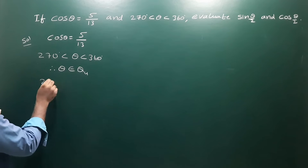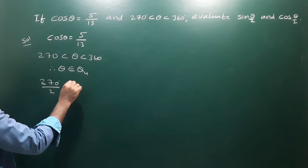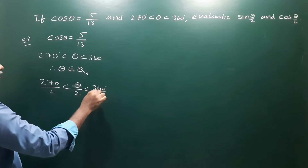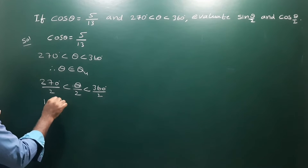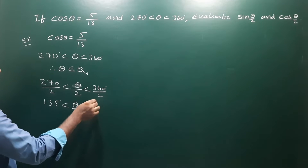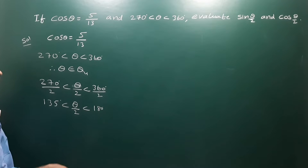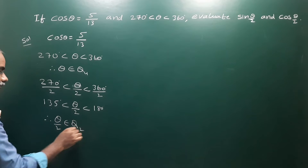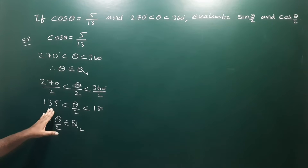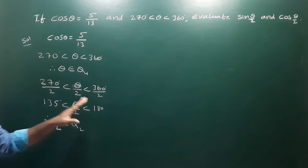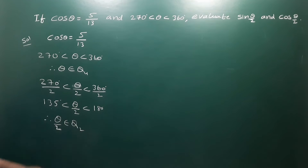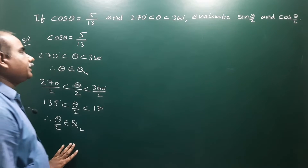Dividing by 2: 270 by 2 less than theta by 2 less than 360 by 2. 270 by 2 means 135 degrees. Therefore 135 to 180, that means theta by 2 belongs to the second quadrant — since the second quadrant goes from 90 to 180. So theta belongs to the fourth quadrant and theta by 2 belongs to the second quadrant.